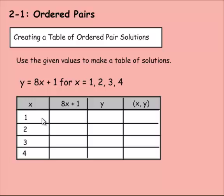So we have 1 for x. And then here's our equation. y equals 8 times x, and then adding 1 at the end. So if we're going to do 1 here, we would do 8 times 1 plus 1. And then we would do for y, 8 times 1 is 8, plus 1 is 9. So y would be 9. If we're going to write it as an ordered pair, it would be 1 for x, 9 for y.